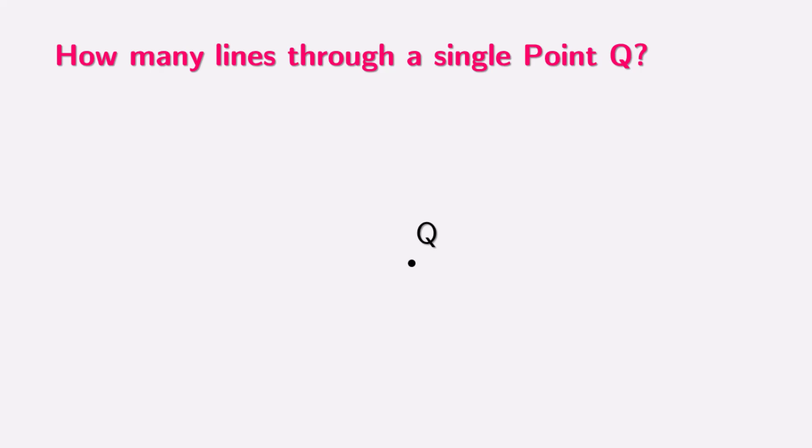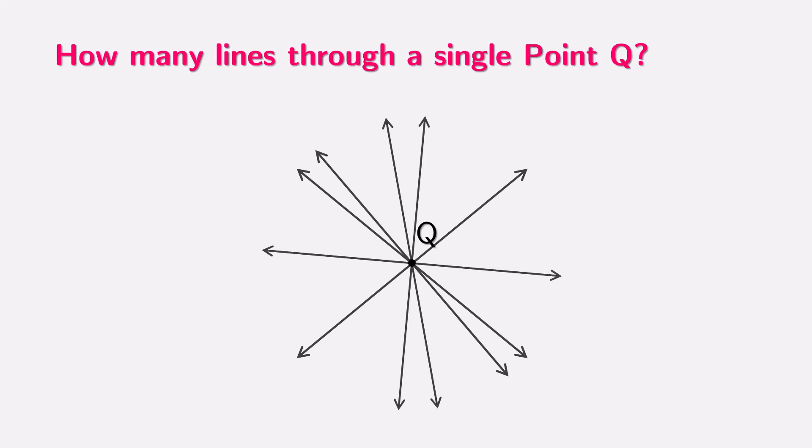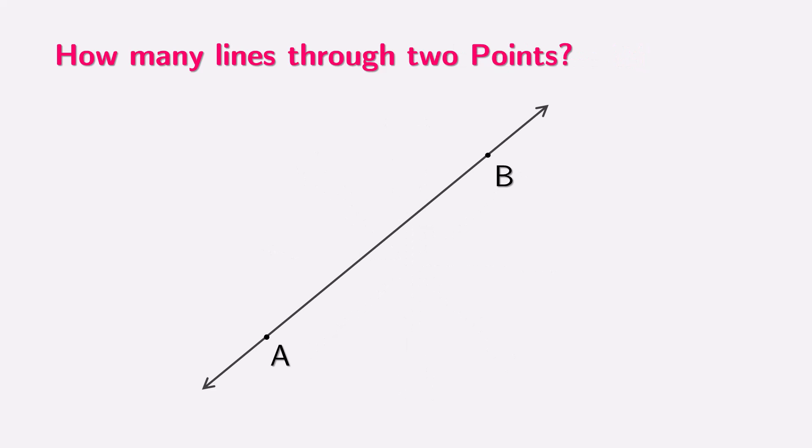Imagine marking a single point on a piece of paper. Now, how many lines can you draw that pass through this point? Think about it. Can there be just one, or is there more? In fact, you can draw an infinite number of lines through a single point, all going in different directions. Now, imagine marking two points on a piece of paper. How many different lines can you draw that pass through both of these points? The answer is simple. There's only one unique line that can pass through both points.